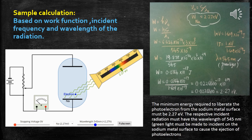How to calculate the work function? In the previous animation, when the incident wavelength is 545 nanometers, the first electron is made to eject out. Using the formula W equals h times nu naught, where nu naught is replaced by c divided by lambda naught, and substituting the Planck's constant, c value, and lambda naught value, you get the answer as 0.0364 into 10 to the power of minus 17 joules. That is called the work function.